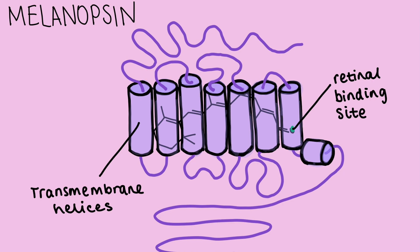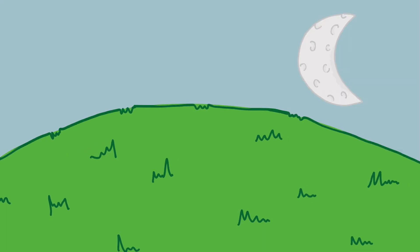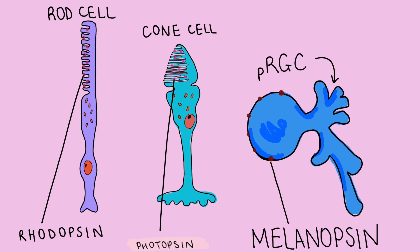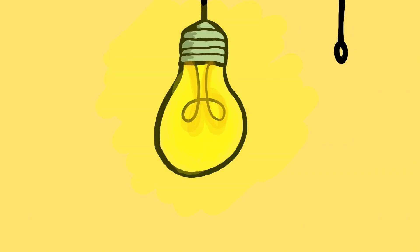Melanopsin is sometimes called a non-visual opsin. This means it can detect changes in light signals but not quickly enough to provide vision like the opsins found in other retinal cells. So instead it can detect light and dark and some patterns.